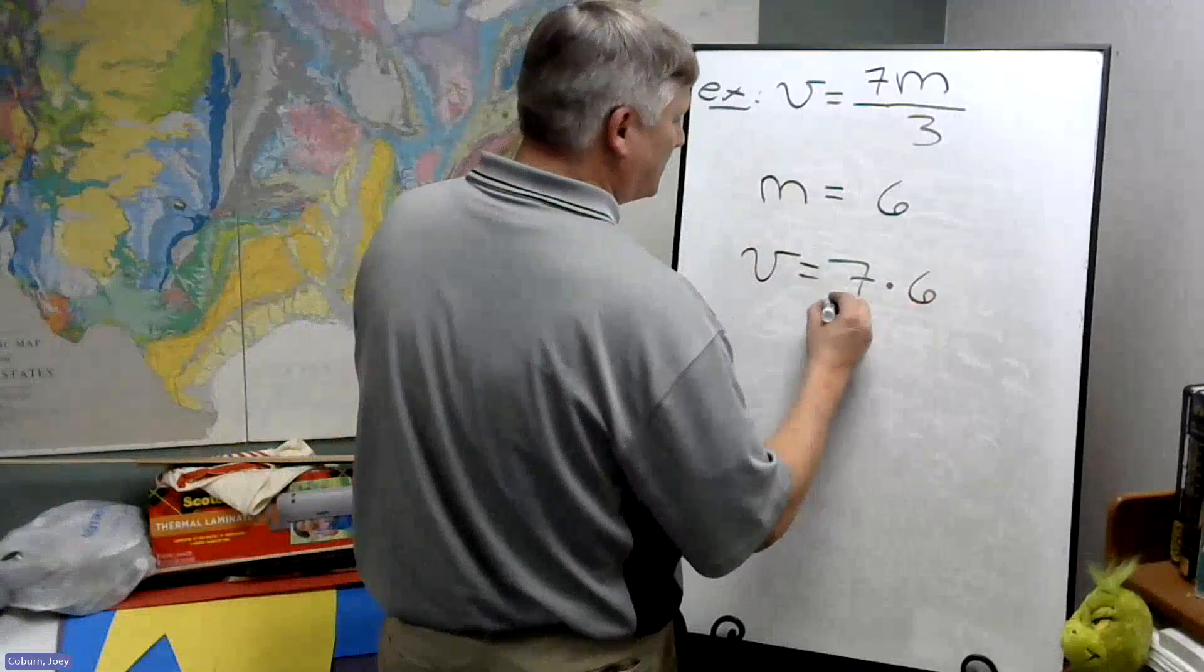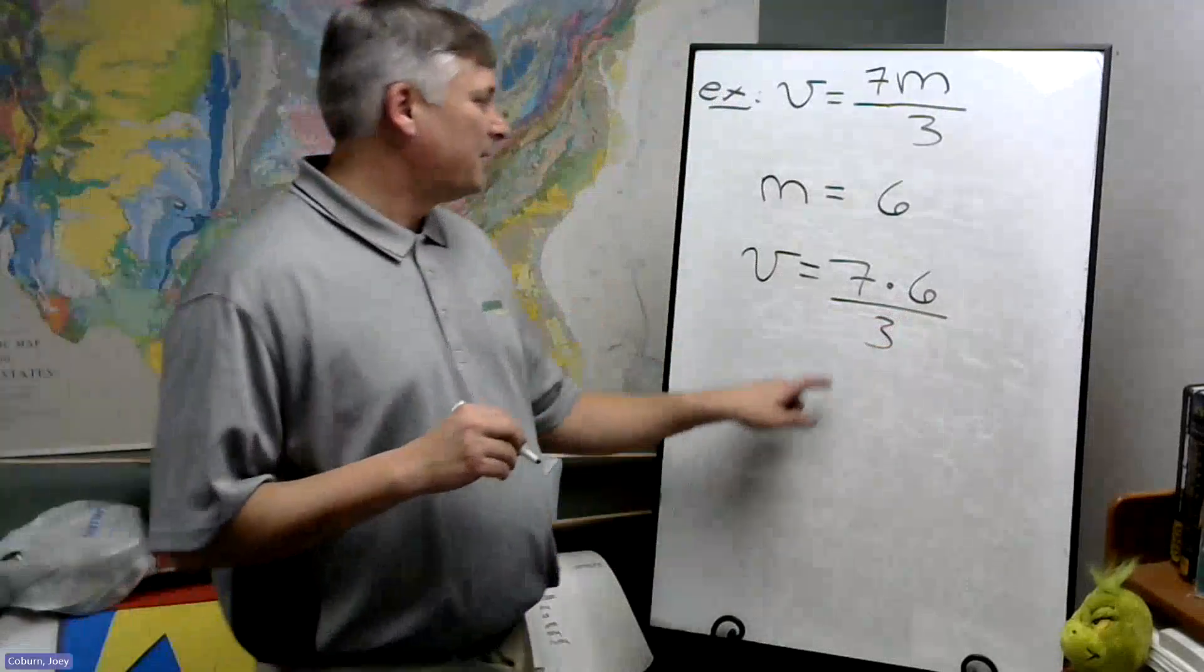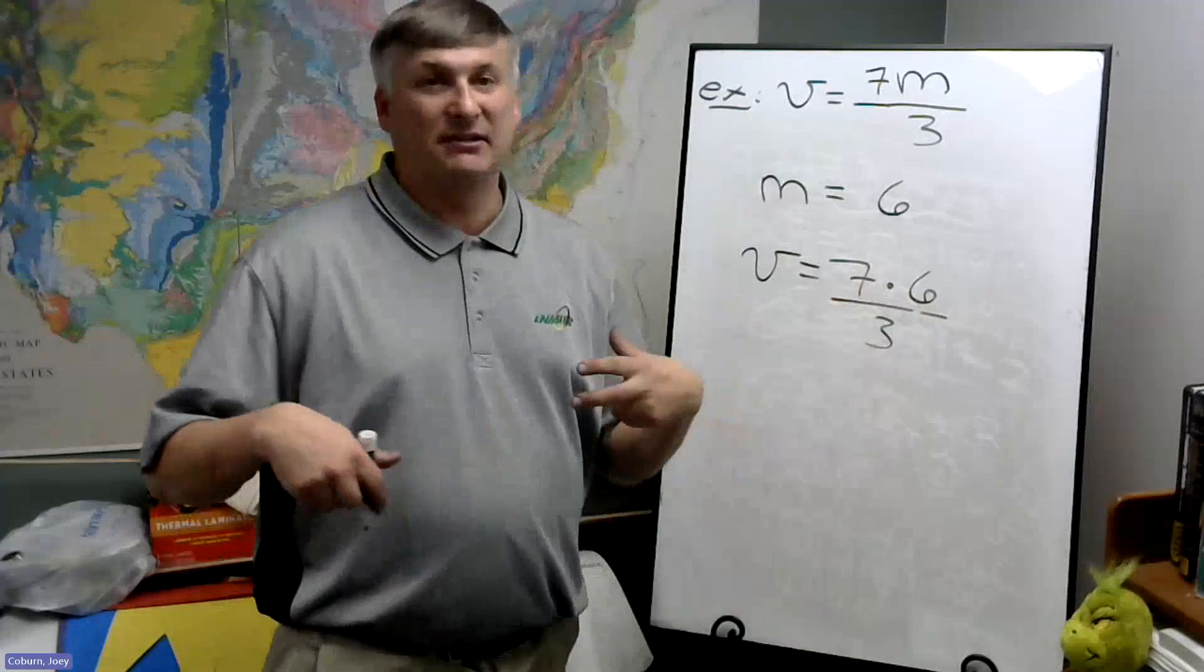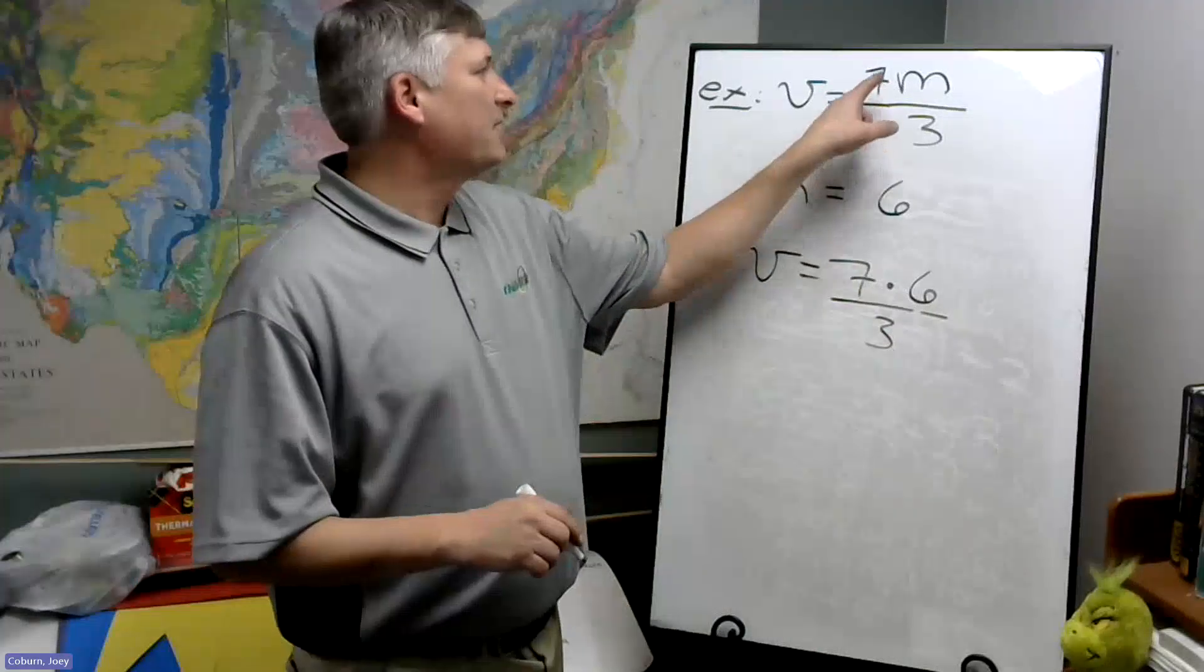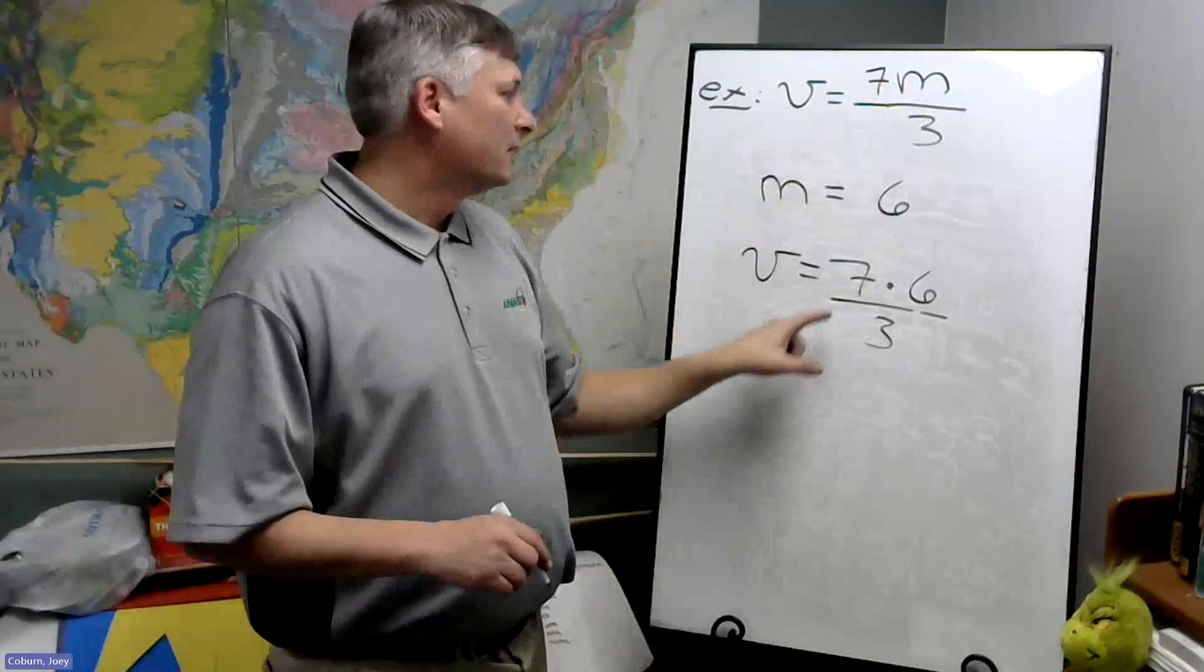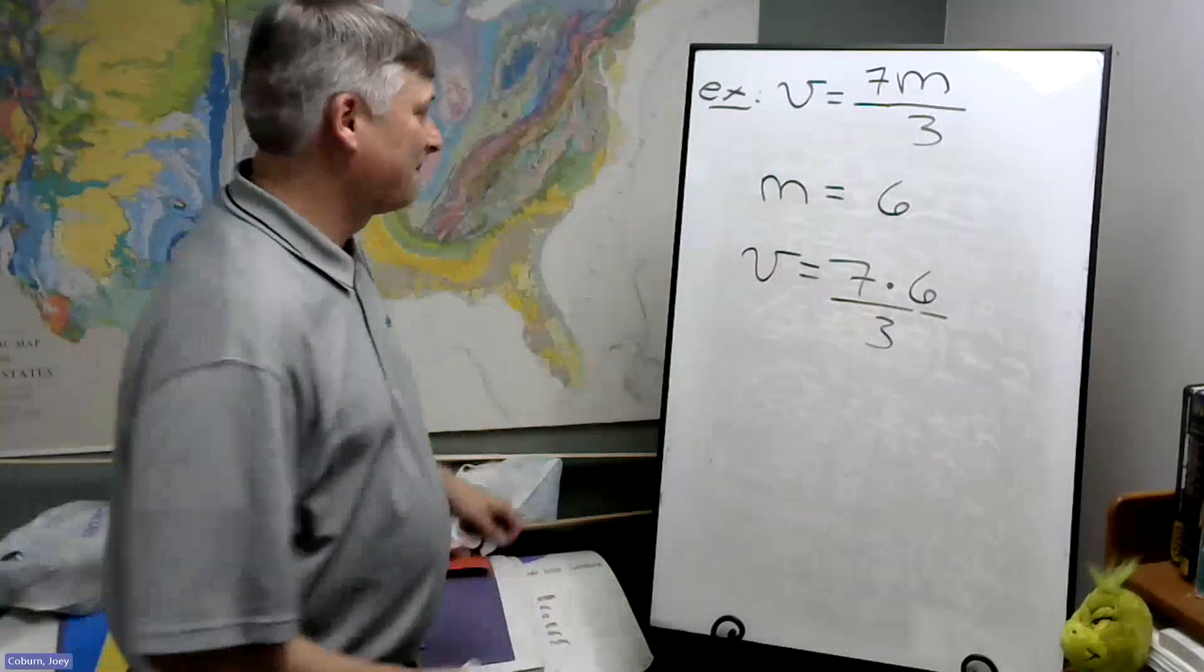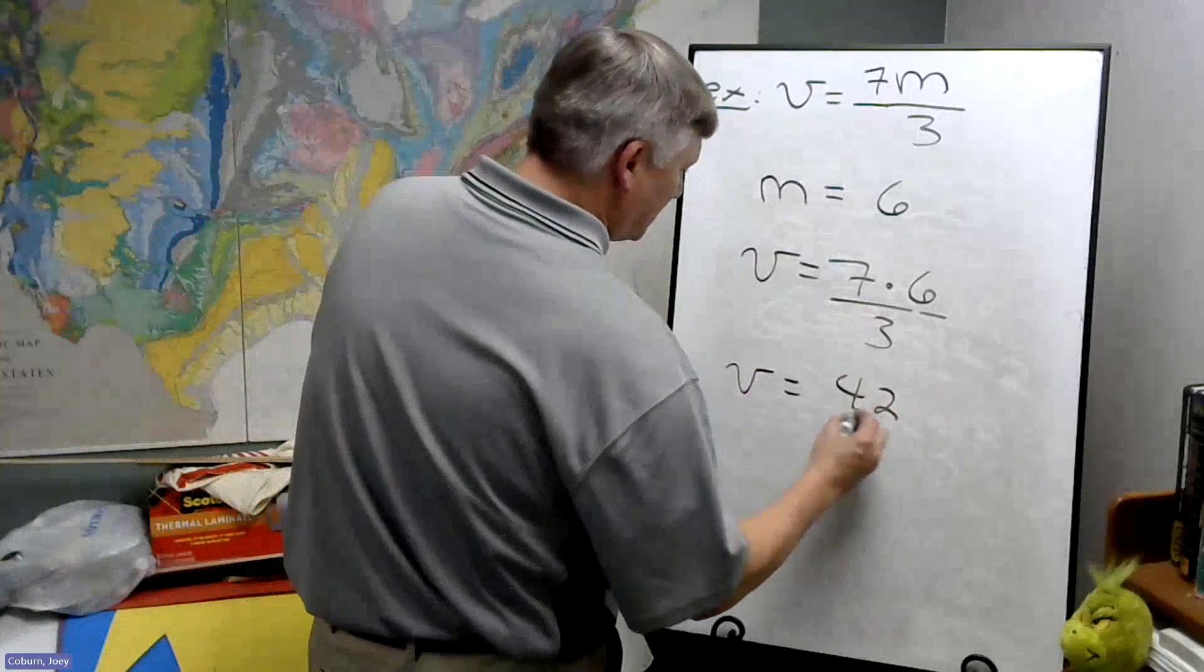Now it's 7 times 6, and we got to put in the times sign so we don't accidentally get the number 76. We want 7 times a number and the number we chose was 6. So that's 7 times 6. 7 times 6 is 42.